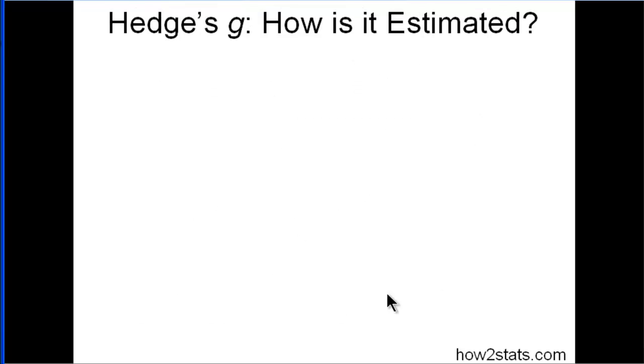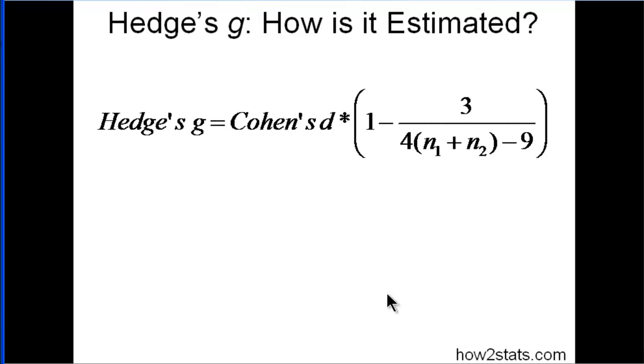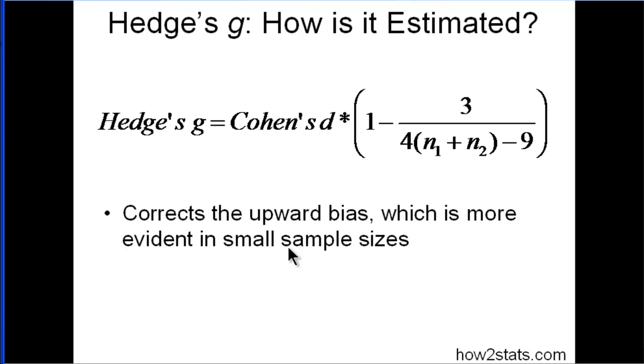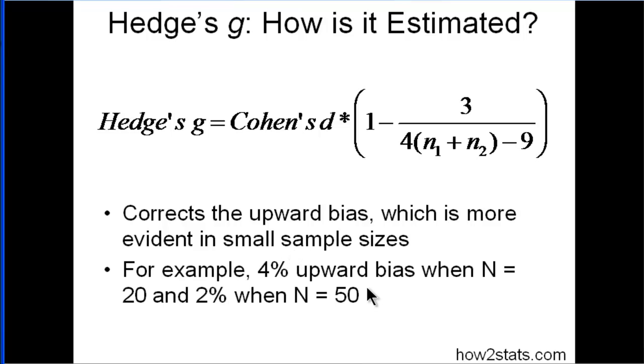And that's where Hedge's G comes in. Hedge's G demonstrated that Cohen's D is actually biased upwards and it needs to be corrected for that. And this is the correction that he introduced. So it's a fairly simple correction and it's more evident in small sample sizes. An example is that when sample sizes are a total of 20, so let's say 10 in each group, the upward bias in Cohen's D is about 4% on average. And when the total sample size is 50, the upward bias is about 2%. So it's not a huge difference, but I would say it's a meaningful one.